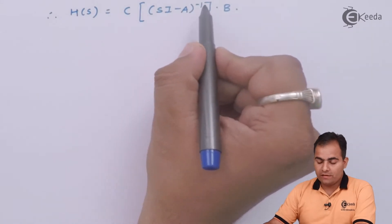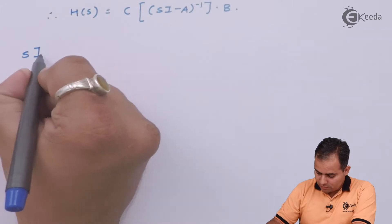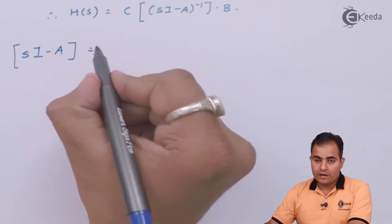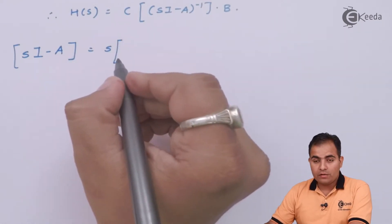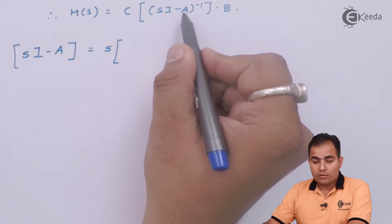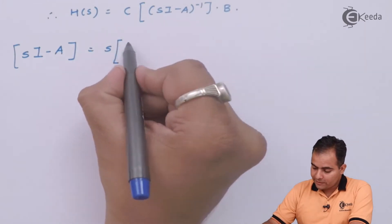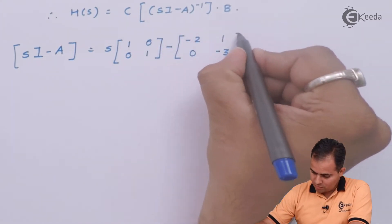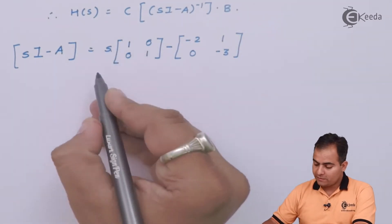First we will find out the matrix of sI minus A, and then its inverse. The identity matrix I is 2×2, matching the dimensions of A. S is multiplied with the identity matrix, giving us the sI matrix. Since A is 2×2, we use a 2×2 identity matrix.